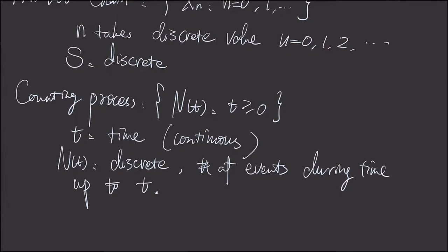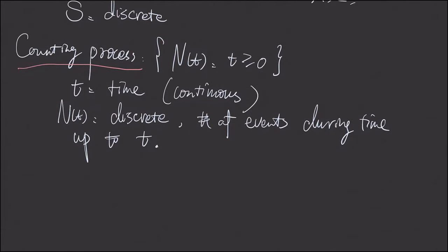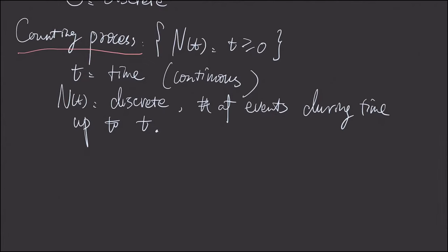And the Poisson process is one type of counting process. And before we move on, let's first review something a little bit. So we want to review exponential distribution.